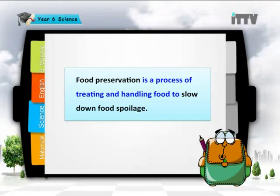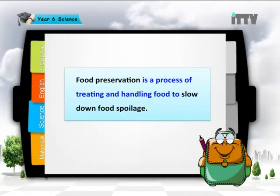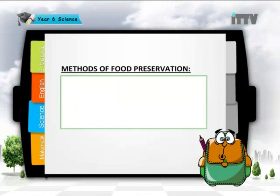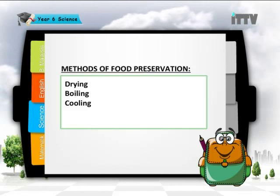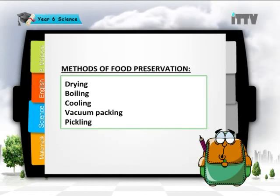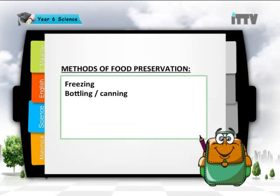From the previous lesson we learned that food spoilage is caused by microorganisms such as bacteria and fungi. Food preservation is a process of treating and handling food to slow down food spoilage. There are many different methods of food preservation such as drying, boiling, cooling, vacuum packing, pickling, freezing, bottling, and canning.